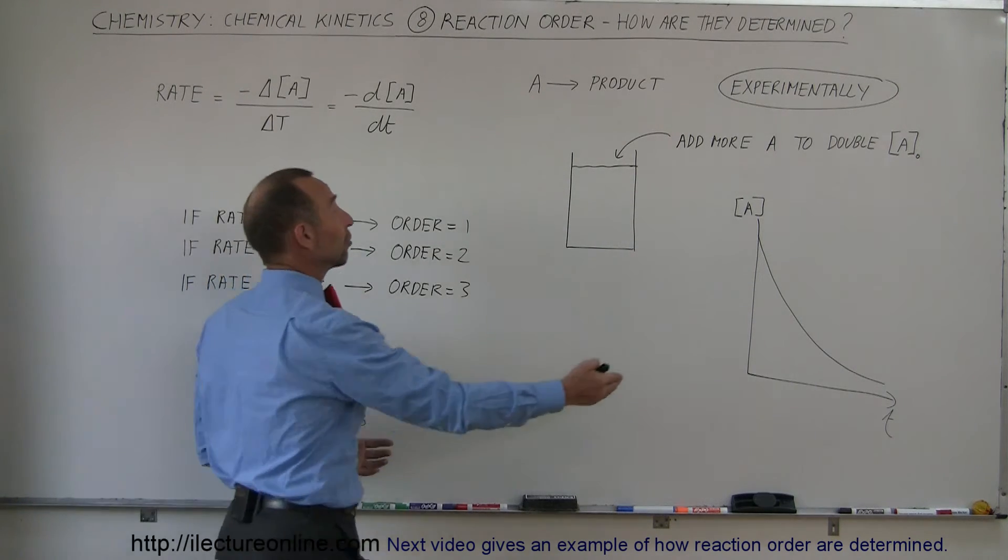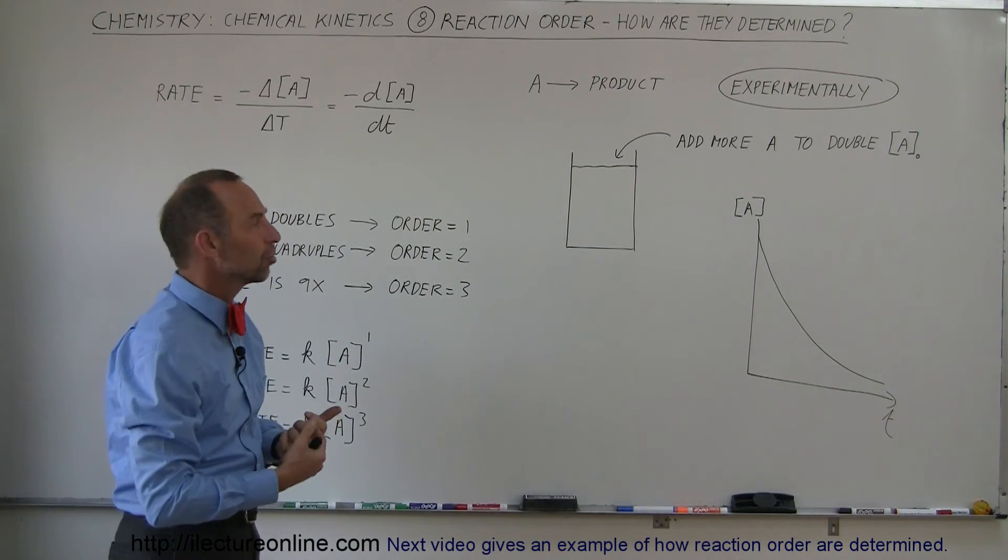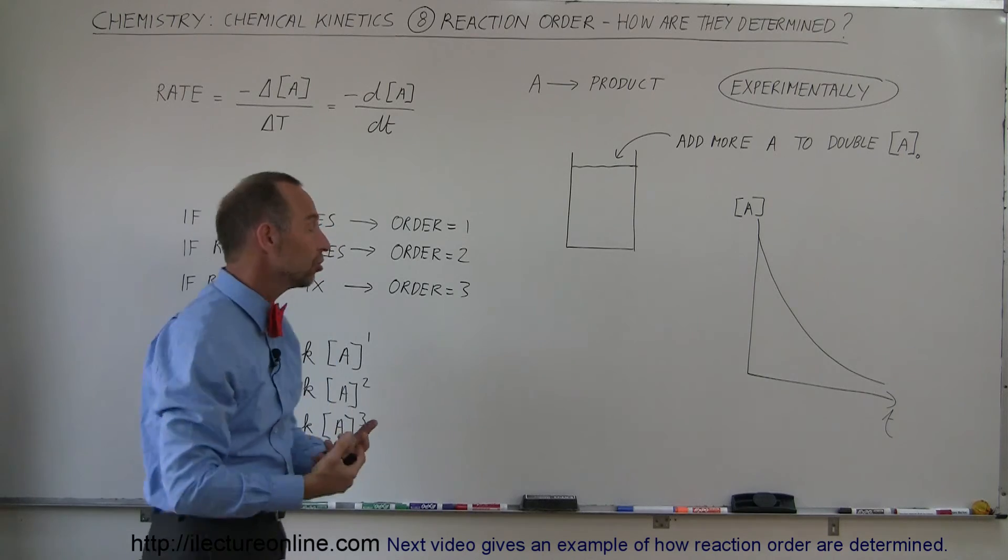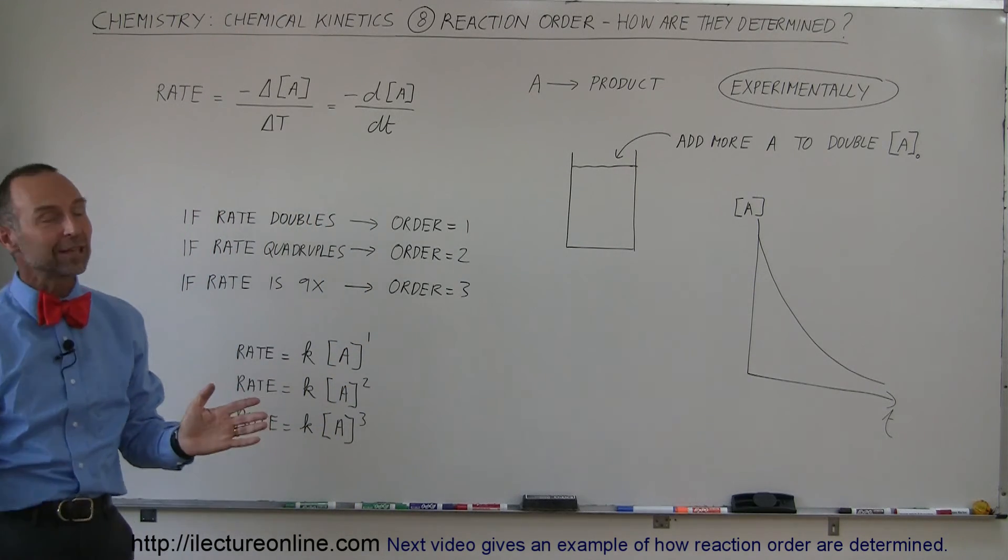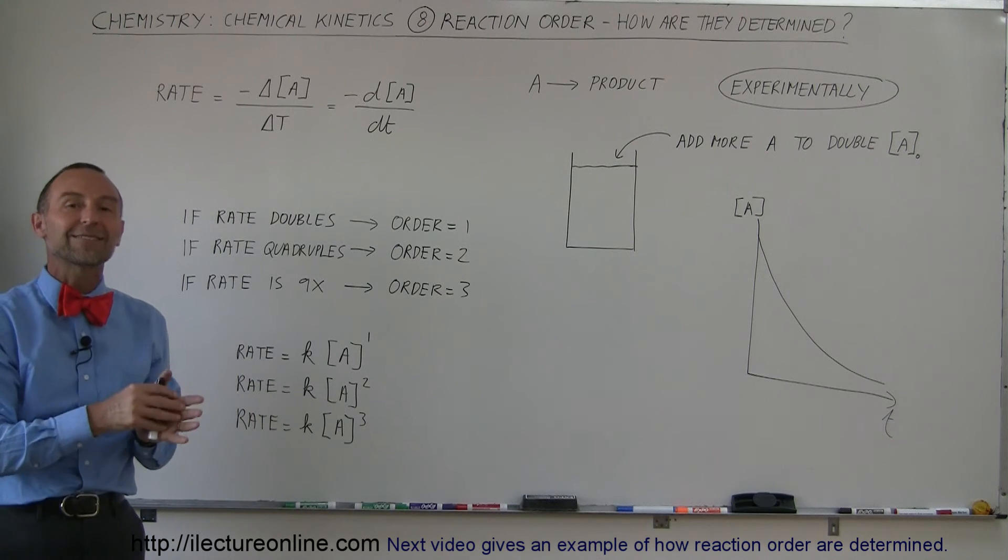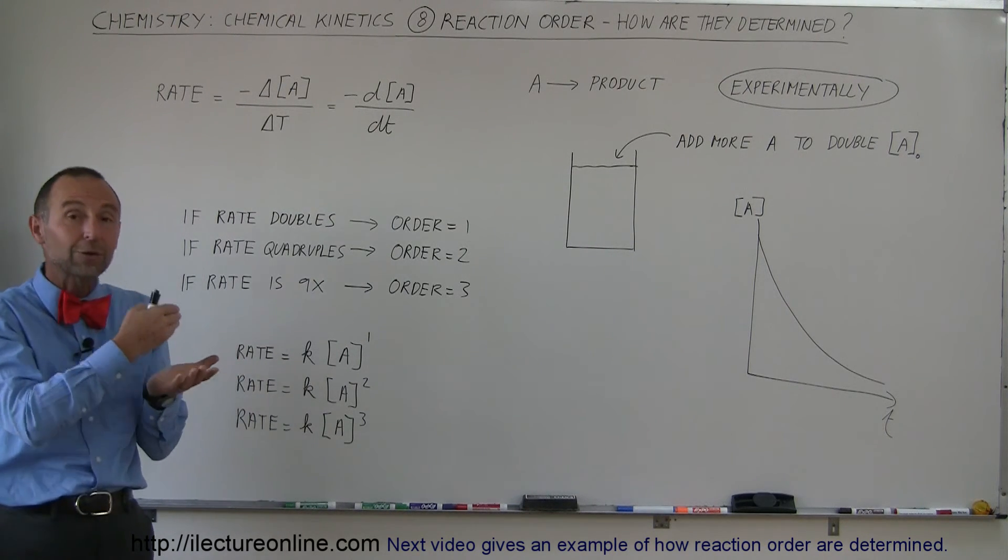The way we do that is simply add more reactant to the solution, watch how the reaction rate changes, and from that determine the order. Now that seems very simplistic. It's not that easy in practice, but in future videos I'll show you how we actually go through one of those experiments.